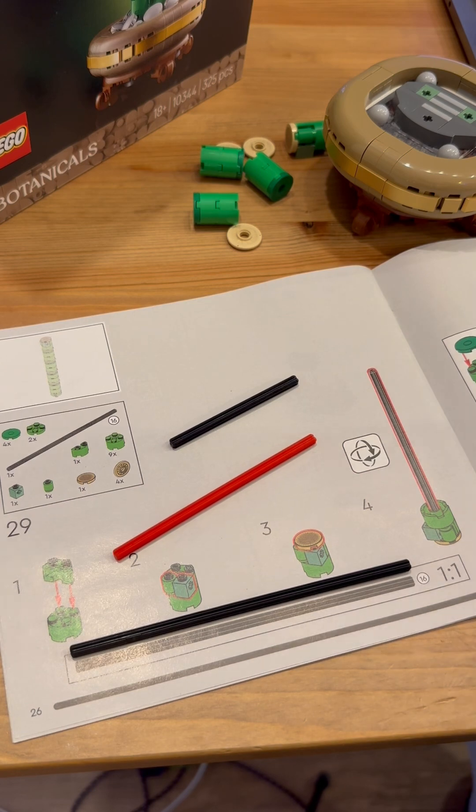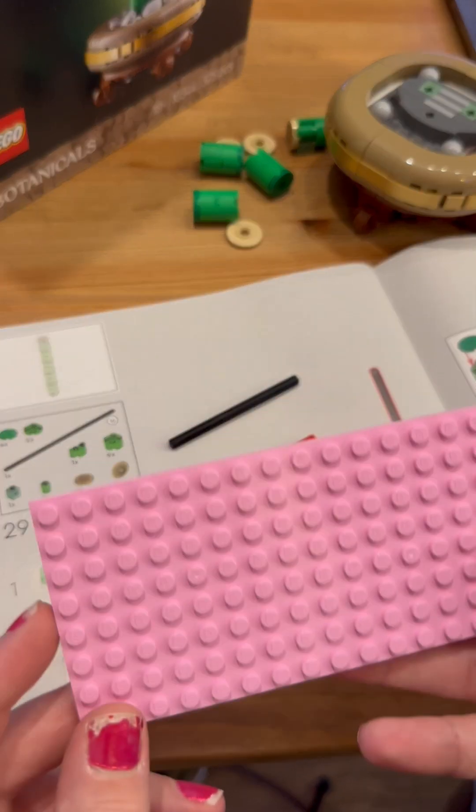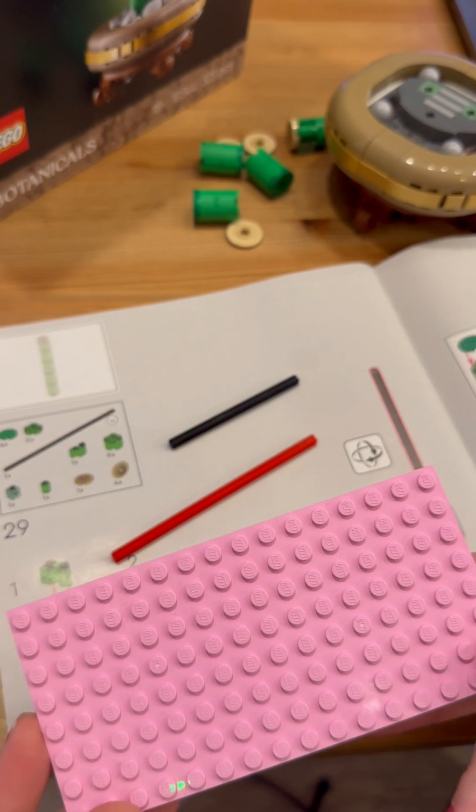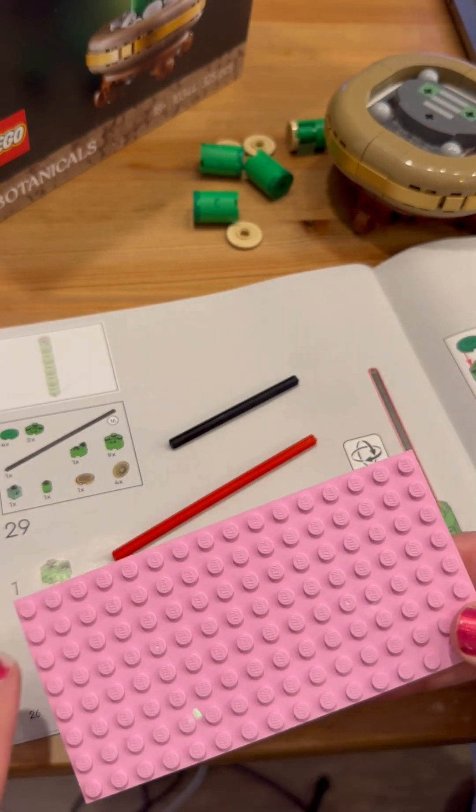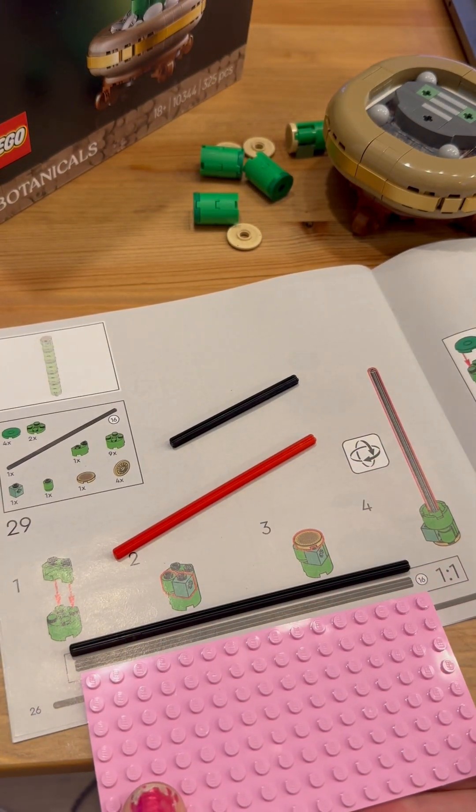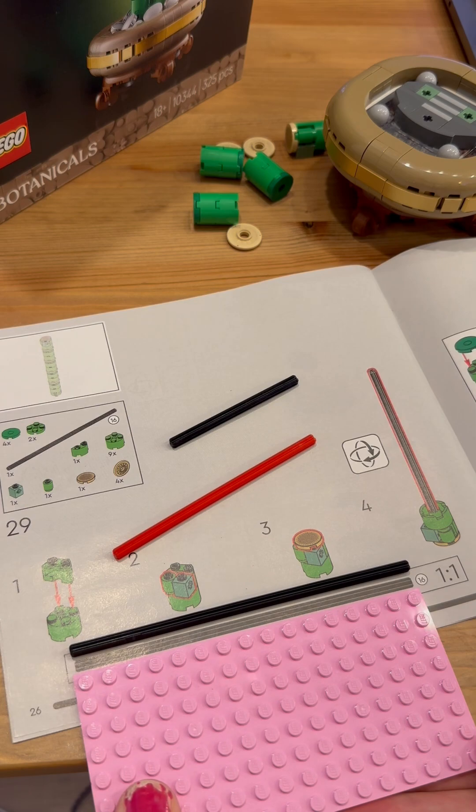And the 16 simply refers to the length of the axle. So what that length is actually measuring is the number of Lego studs. This is an 8 by 16 plate, and if I match that up, you can see it's a perfect match for the length of that axle.